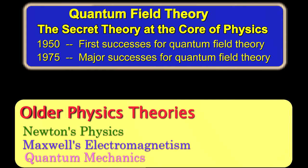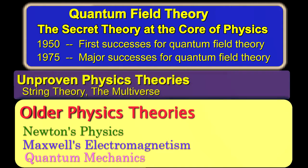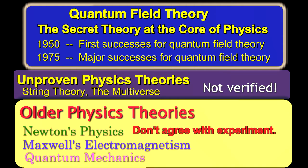It's the theory whose predictions are being verified by experiment, but the media prefers to cover things like string theory or the multiverse that have made no verified predictions. The fact is, other forms of physics have led to predictions that are contradicted by experiment. That's the polite way of saying they're wrong.